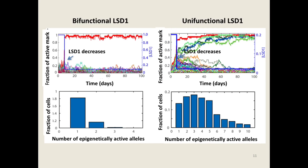On the other hand, the case with hypothetical unifunctional LSD1 is completely different. Once differentiation takes place, an allele starts to gain active marks. When the first allele turns to be active mark dominated, many others are trapped in the middle, and some continue to gain slowly to become active later. Averaging over a thousand cells shows that most cells have multiple active alleles at the end.